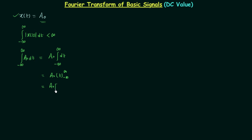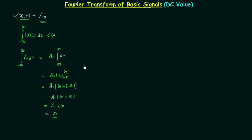Putting in the limits, we get A0 times infinity minus minus infinity, which gives A0 times infinity. So the result of the integration is infinity. This means the area under mod x(t), which is A0, equals infinity. Therefore the condition for absolute integrability is violated, and we can say that A0 is not an absolutely integrable signal.